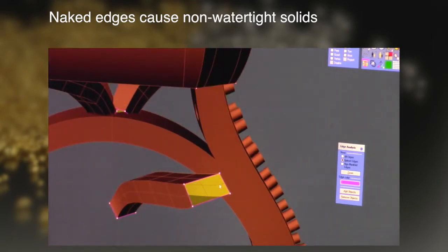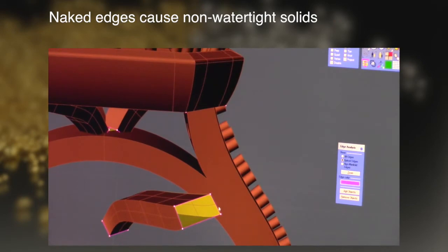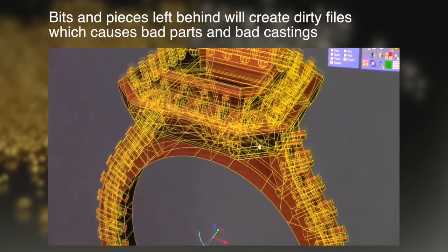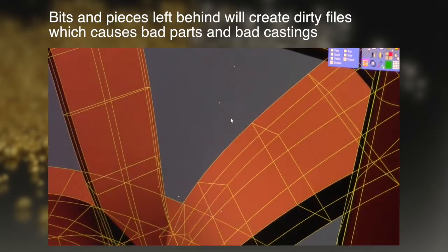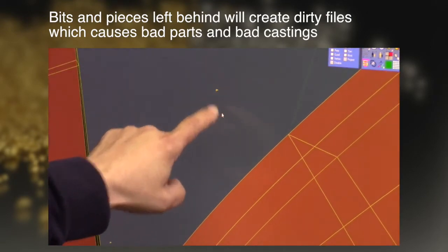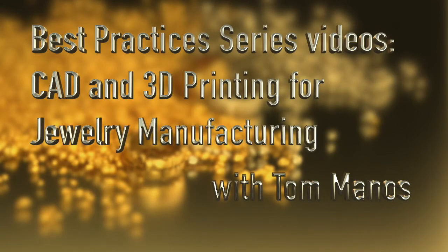In summary, we covered: naked edges cause non-watertight solids, and bits and pieces left behind will create dirty files, which causes bad parts and bad castings. Hope you enjoyed this segment and stay with us — there are more Best Practices videos in CAD and 3D printing for jewelry manufacturing to come.